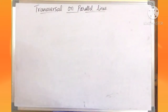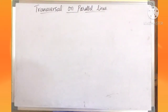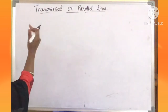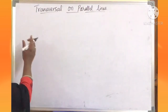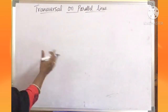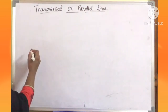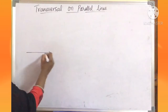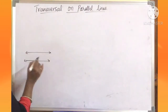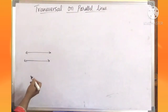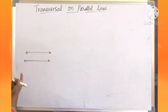Now you know what parallel lines are. Two coplanar lines which do not intersect are called parallel lines. When you extend the two lines they never intersect. These are called parallel lines.